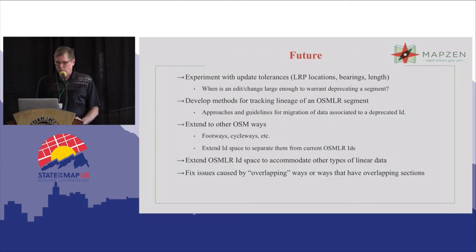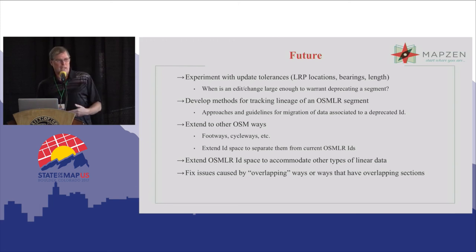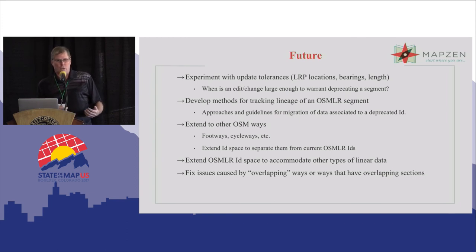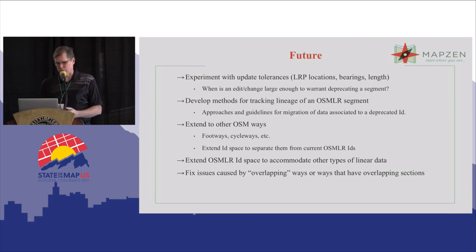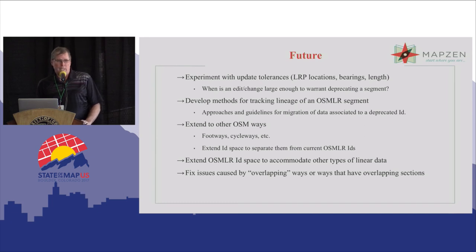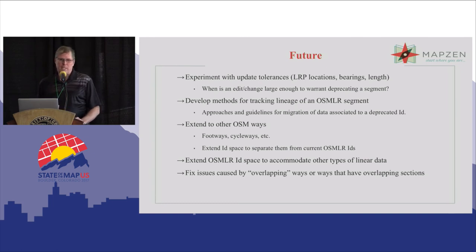Some of the future work: we want to experiment with the update process and tolerances. We think it's important to have methods of tracking lineage so that if one segment gets deprecated and replaced by two new ones, anyone who has associated data to the prior one can decide whether to transition that data to the new segments. We also want to extend to cycleways, paths, and other OSM ways, but in a way that doesn't interfere with the ID space we've already created, so they'll each have a different segment of the ID space.